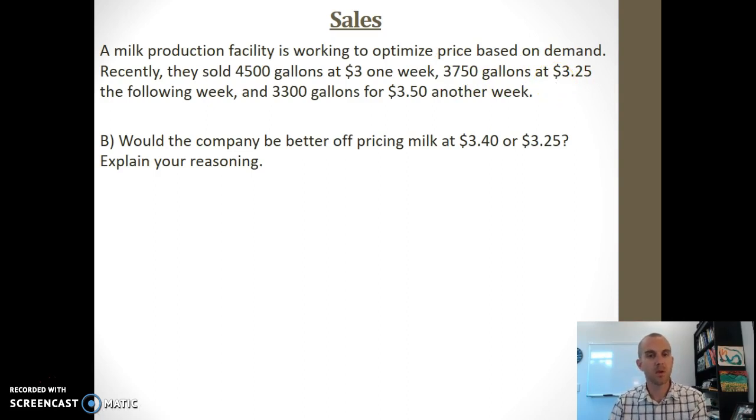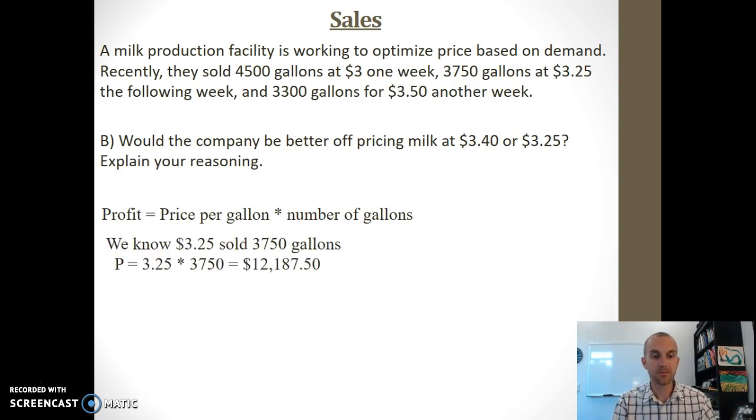Either method may depend on your personal preferences. I like to use actual numbers when I have them. I know that profit equals the price per gallon times the number of gallons sold. At $3.25, I sold 3,750 gallons, so profit equals 3.25 times 3,750, which is $12,187.50.